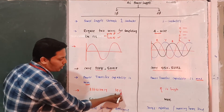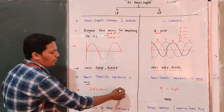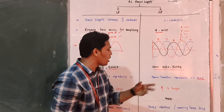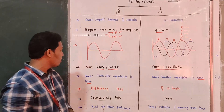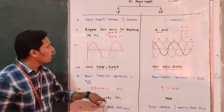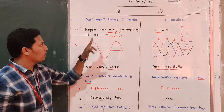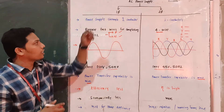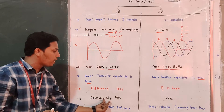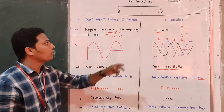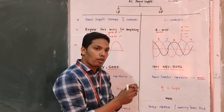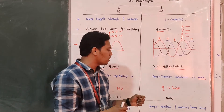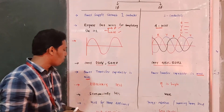Next, the efficiency for a single phase system is less, and the three phase system has high efficiency. Economically, for a single phase supply, only a single conductor is required, so it is economically less. But in the three phase system, we need three conductors, so economically it is more.